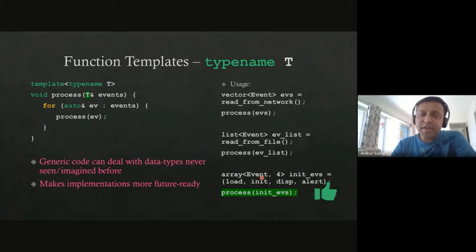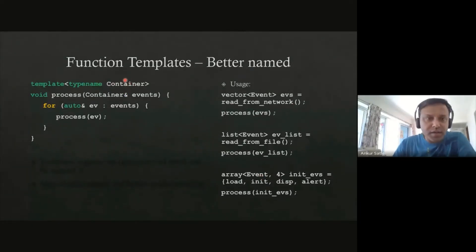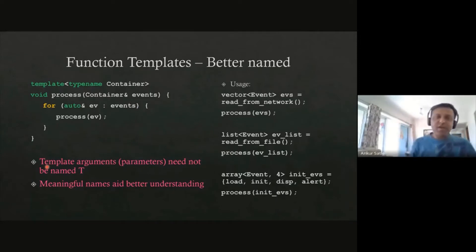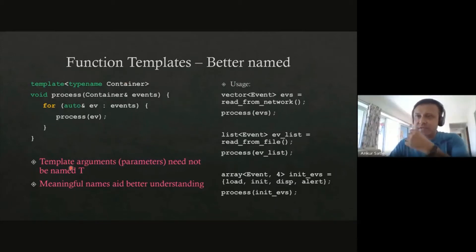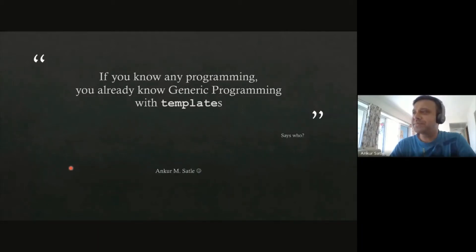We look at the difference between those two overloads — only the data types are different. We say let's take some data type T, and since we're in C++ you can't use a symbol without declaring it, so you declare it with 'template typename T'. You receive T by reference in the function so you work on the same copy the caller has. This is then a generic function — we just made that out of the two specializations we had written by hand. Generic code can deal with data types never seen before, making implementations more future-proof. And please name things better — instead of T, name it 'container'.